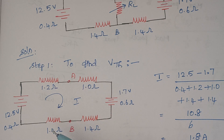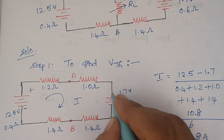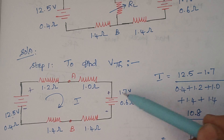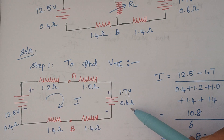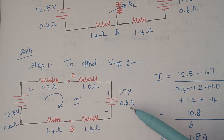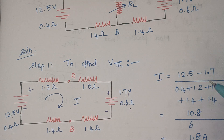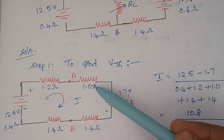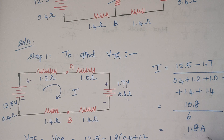Then we are going to calculate the current. Here current flows from minus to plus, so it is plus voltage, and here it flows from plus to minus, therefore this 1.7 is considered as minus voltage. All the resistances are connected in series, and this 0.4 ohm and 0.6 ohm are internal resistances of the source. We are having two voltages with opposite polarity, so 12.5 minus 1.7, divided by adding all resistances: 1.2 plus 1 plus 0.6 plus 1.4 plus 1.4 plus 0.4. Once you have done this, we can easily calculate the value of current that is 1.8 amps.